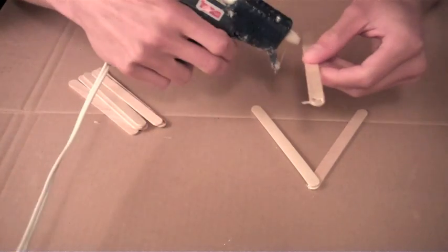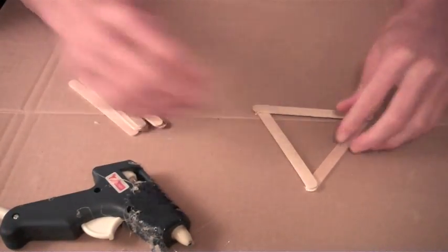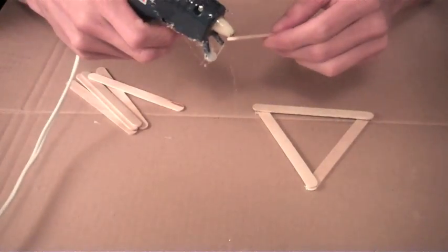Begin by constructing the two sides. Use small dabs of hot glue at the joints and then press firmly to make strong bonds with the hot glue.